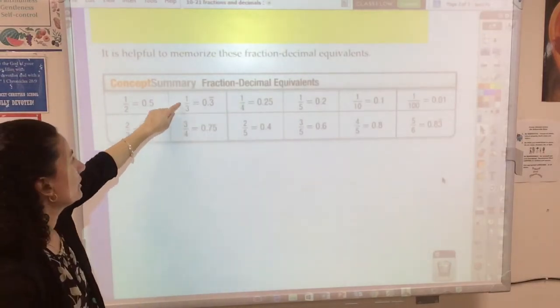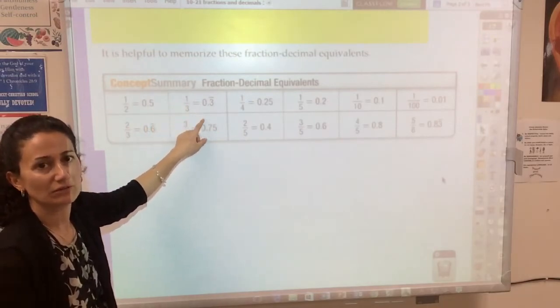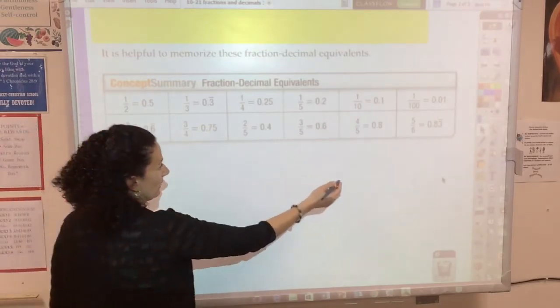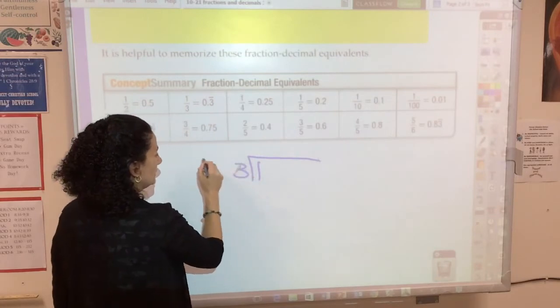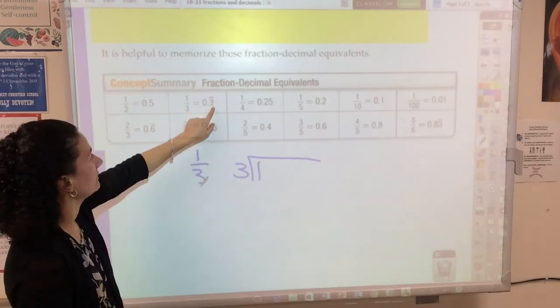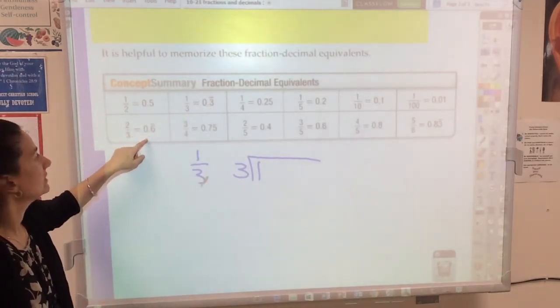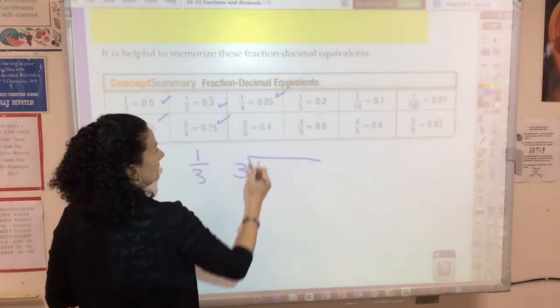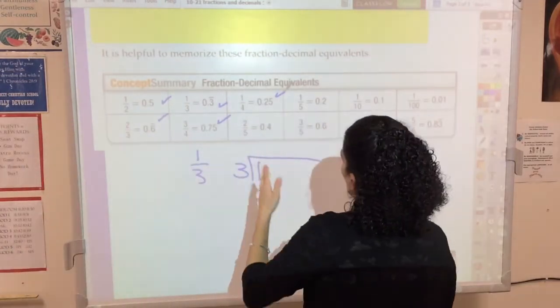A few other easy ones. 1/3 is 0.33333. Check it out if you want to see: 1 divided by 3. When you do 1 divided by 3 to find the decimal equivalent for 1/3, you'll see you're going to get 0.3 repetitive. So 2/3 is 0.6 repetitive. These are some easy fraction decimal equivalents that you might want to commit to memory if you haven't already.